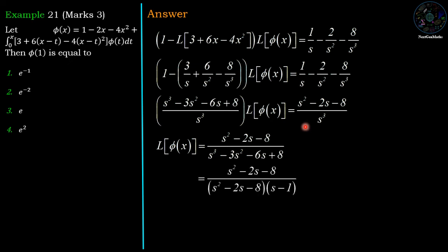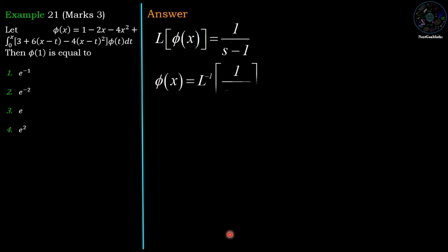Factorizing the denominator, we get (s² - 2s - 8)(s - 1). The numerator and denominator factor (s² - 2s - 8) are common, so they cancel. We have Laplace of phi(x) = 1/(s - 1).